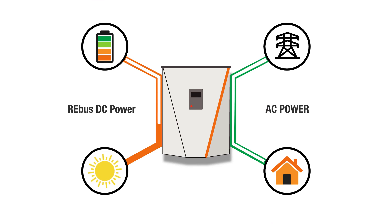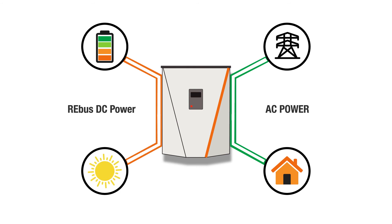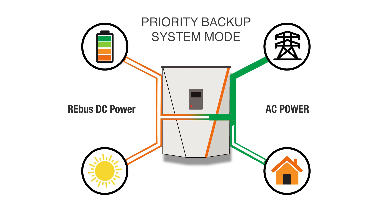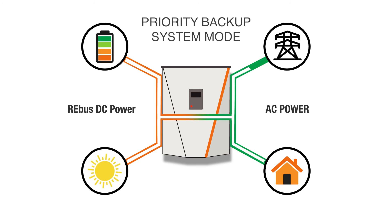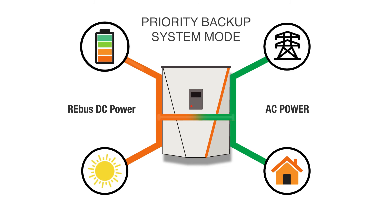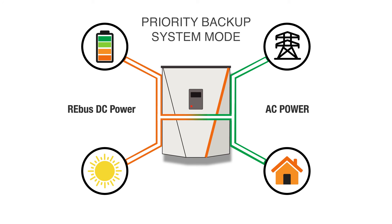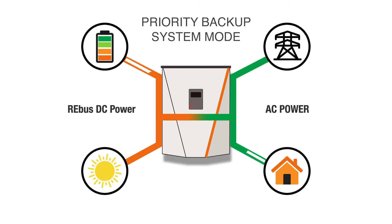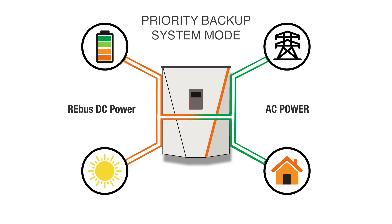Both self supply and clean backup modes rely on available solar power to recharge the PowerCell battery. When solar power is not available, the battery may be charged using utility power with the priority backup system mode. This is useful when an outage is expected in the near future and solar power is insufficient to charge the battery to 100% on its own. Priority backup allows the battery to charge using available solar power, and by supplementing with grid power the battery can recharge at its maximum rate. If your PowerCell system is subject to any third-party financial or interconnection agreements, check that grid charging is not prohibited.